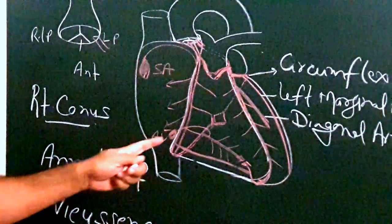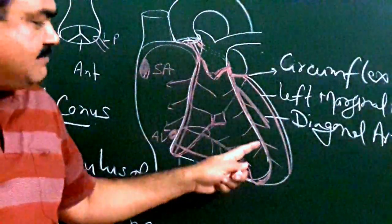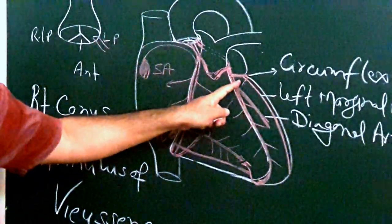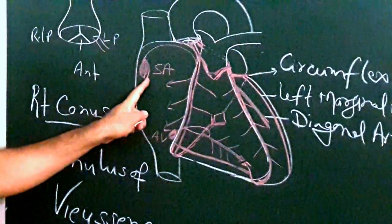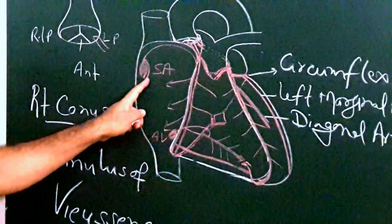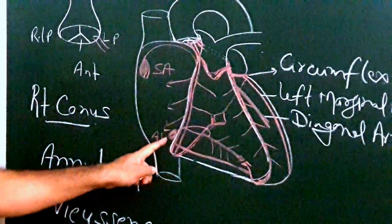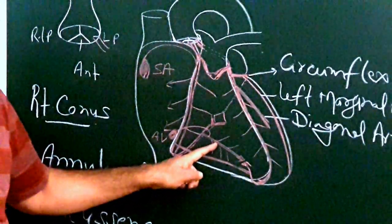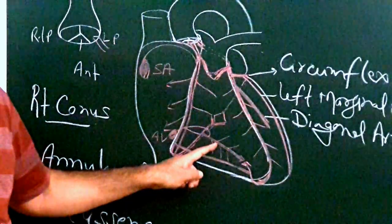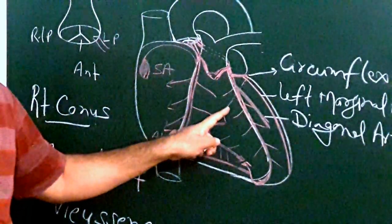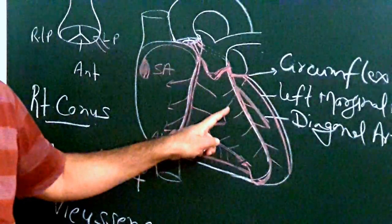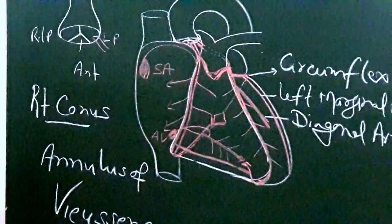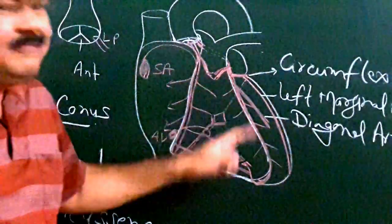These are the various branches of the left coronary artery. In 35% of cases, the left coronary artery also gives rise to the posterior interventricular artery. This is all about the left coronary artery.